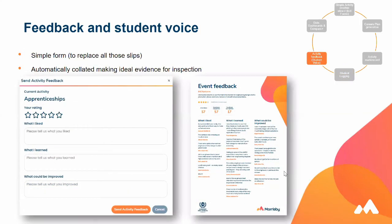This is the feedback form. When you do an activity, you can ask students to complete a feedback form. In this case, it's about the activity on apprenticeships. Students rate the activity out of five, what they liked, what they learned, and how it could be improved. Once submitted, we create a report for you automatically showing attendees, the feedback given, and how many feedback forms were completed. You can also chase feedback through the system.